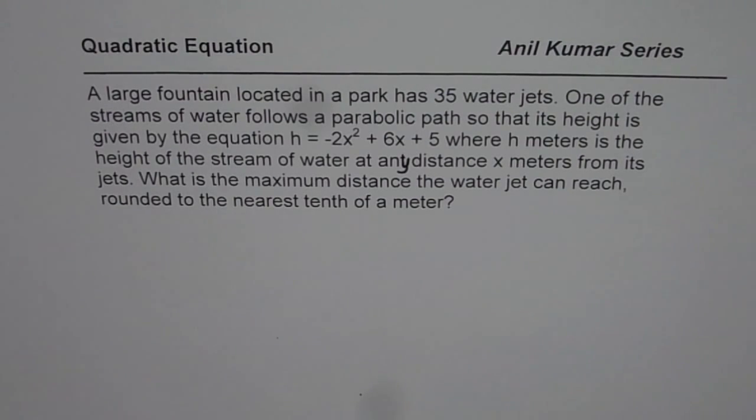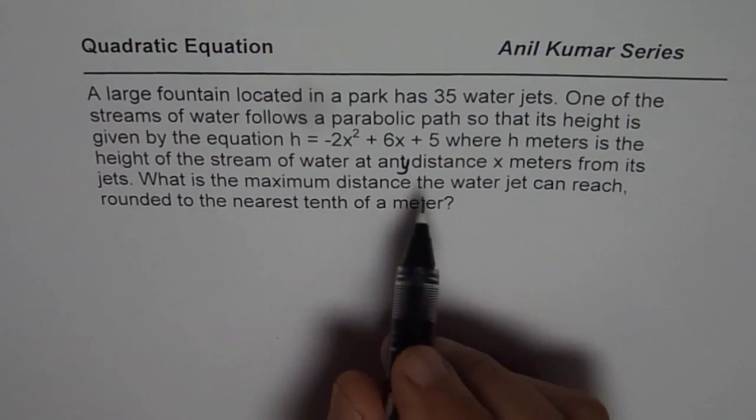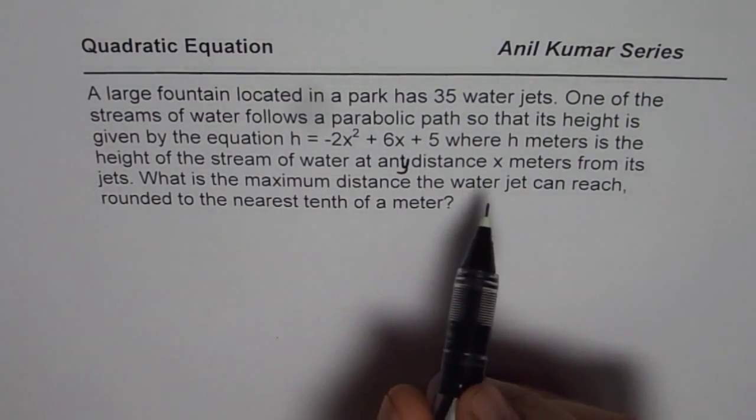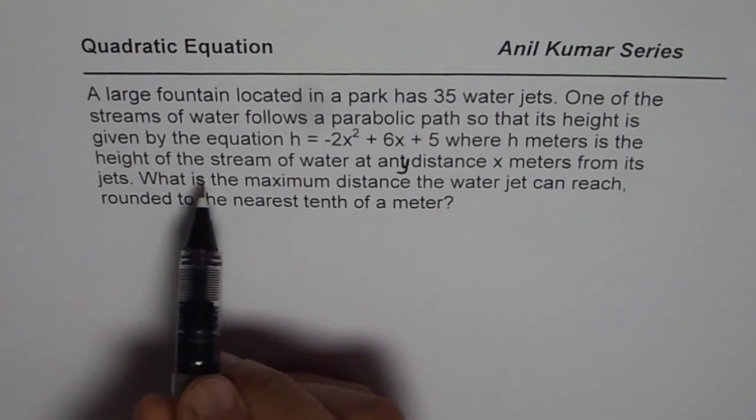Now I have picked up this question from a test paper, and what I notice is that in the test paper the student has found the maximum height and has got full marks. But I think it should be read as the maximum distance, not the height of the stream of water.